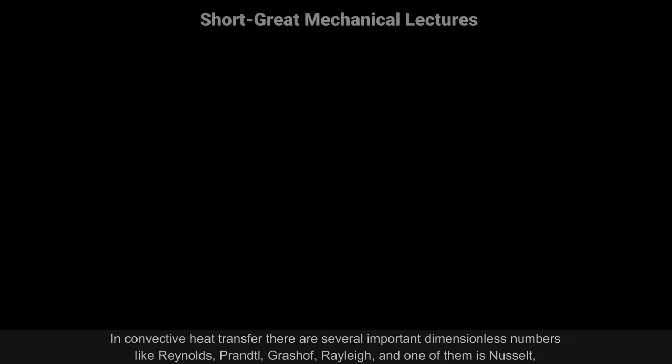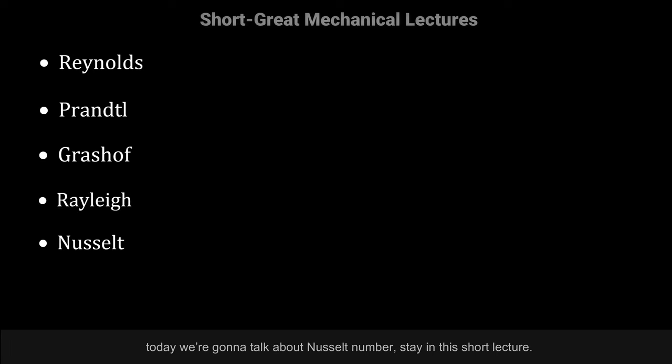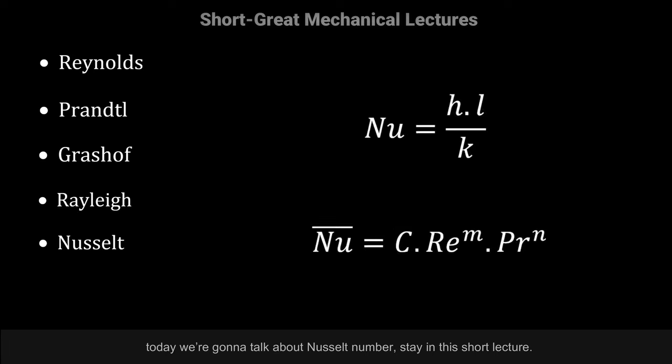In convective heat transfer there are several important dimensionless numbers like Reynolds, Prandtl, Grashof, Rayleigh, and one of them is Nusselt. Today we're going to talk about the Nusselt number.